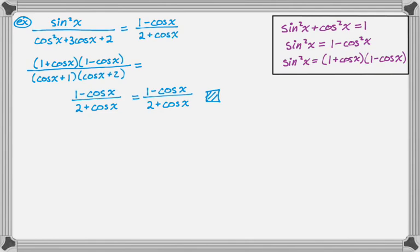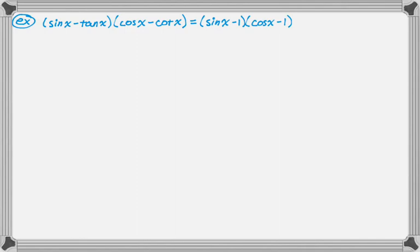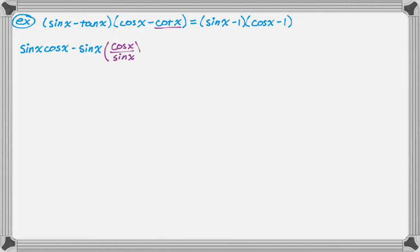Let's look at one more, which kind of uses both techniques. We have (sine − tangent)(cosine − cotangent) equals (sine − 1)(cosine − 1). The left-hand side has more trig functions in it. So what I'm going to do is just distribute and see what happens. I'm going to take sine and multiply it by everything in (cosine − cotangent), and then for cotangent I'm going to replace it using the ratio identity — replacing it with cosine over sine.